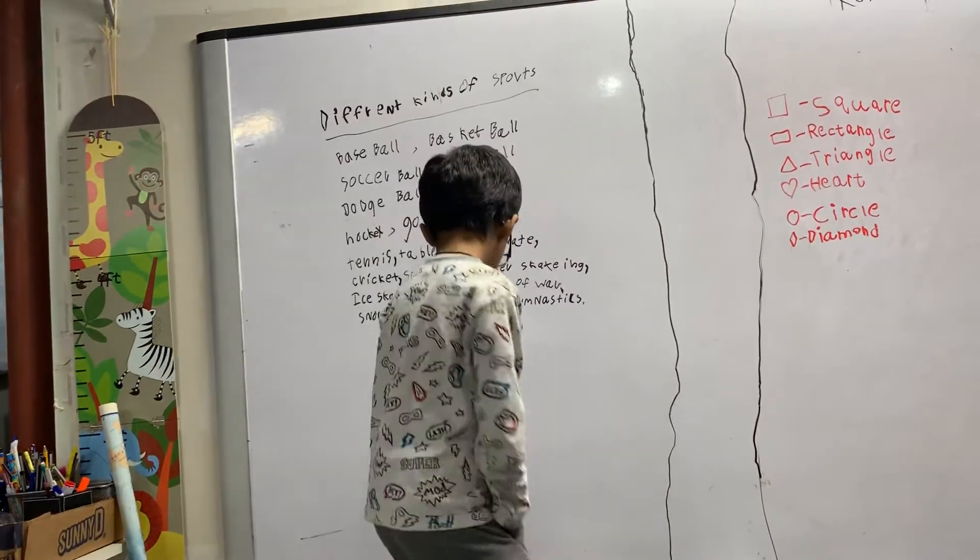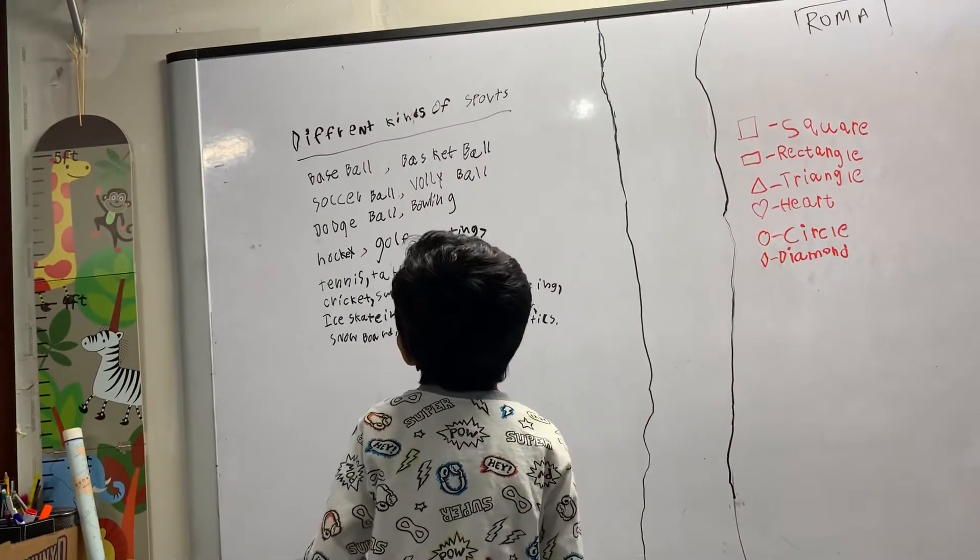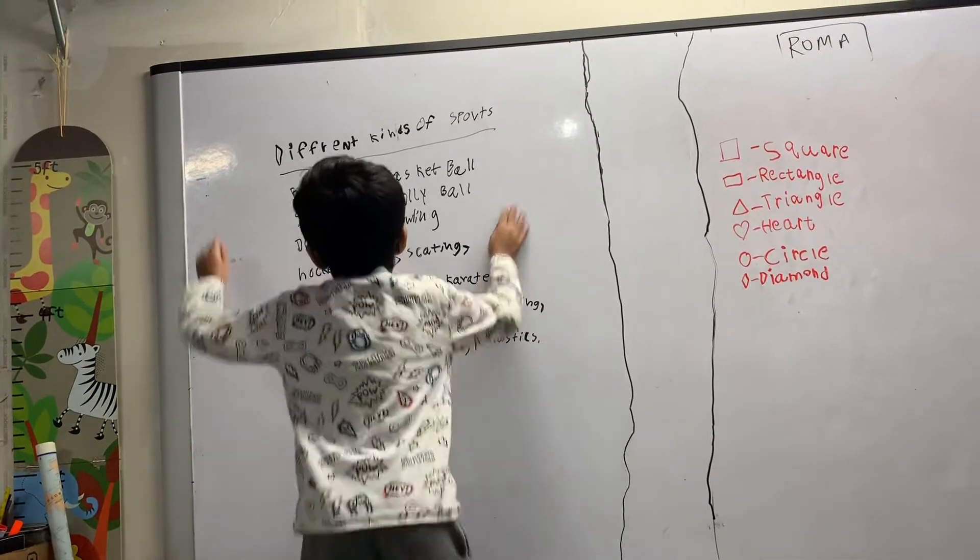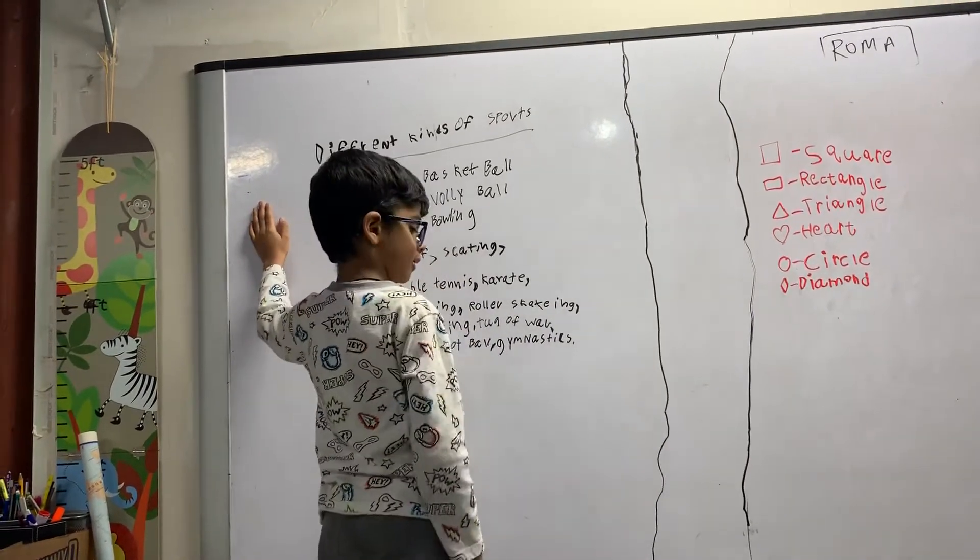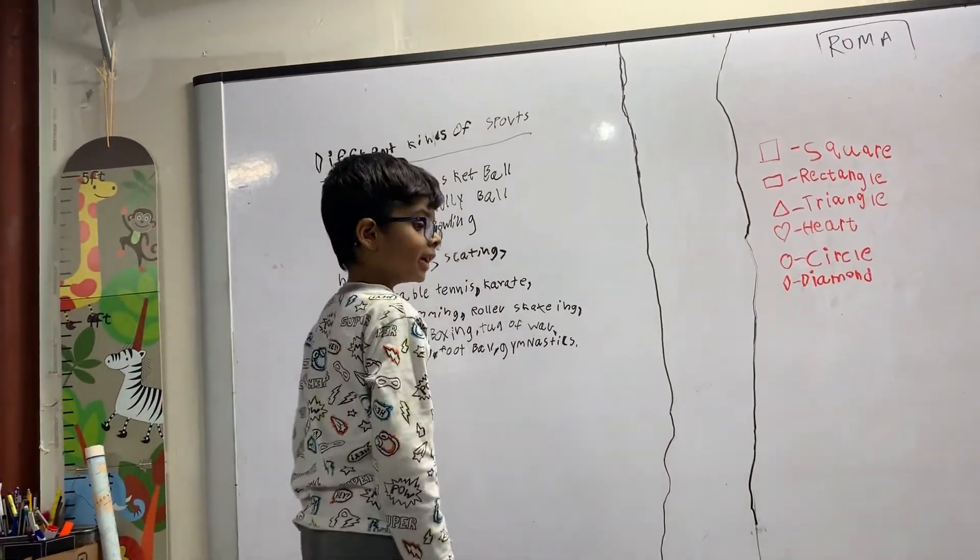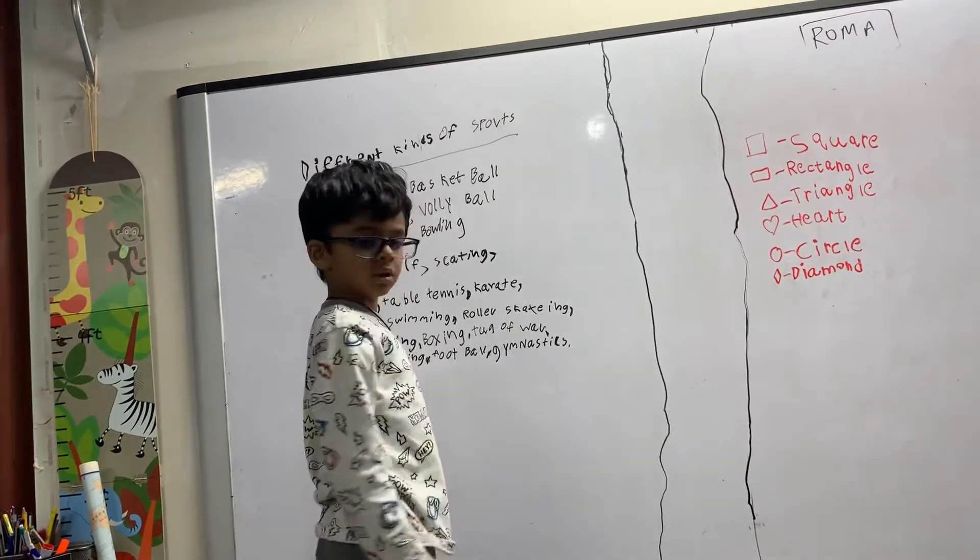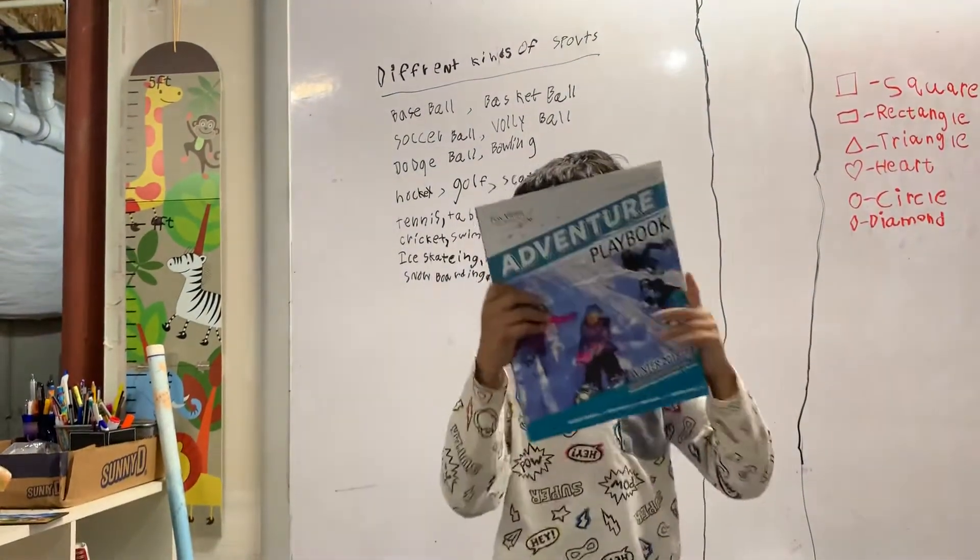Hi, my name is Trace, and today we're going to talk about different kinds of sports. Here are the ones that we found out in Google, or the ones that we found inside this book.